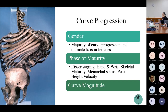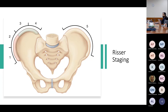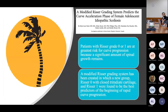Regarding gender, the majority of curve progression occurs in female patients. There are multiple staging systems to predict where a patient is in their growth phase. The Risser staging system is based on the growth plate on the iliac wing — as the growth plate progresses from the anterior to posterior portion of the wing, you see more complete growth cycle completion. A modified Risser system added the triradiate cartilage: if the triradiate cartilage was open, it was a better predictor of curve progression.